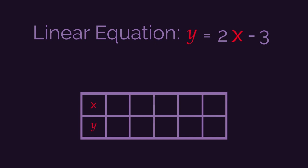I always start with 0. So substitute in 0 in place of x. So that means y equals 2 multiplied by 0 minus 3. So then y equals 0 minus 3. So y equals negative 3. And we can enter this into our table. When x is 0, y is negative 3.